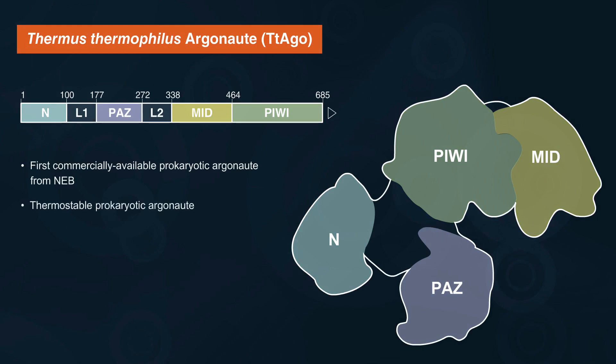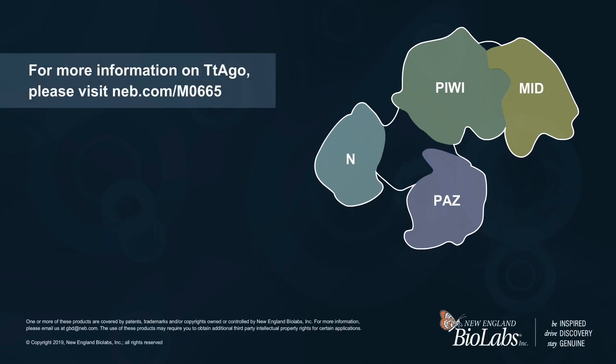TtAgo is a thermostable prokaryotic argonaut which utilizes short, 5' phosphorylated, single-stranded DNA guides to target and cut DNA substrates at temperatures between 65 and 85 degrees Celsius. For more information on TtAgo, please visit NEB.com/M0665.